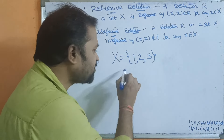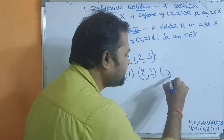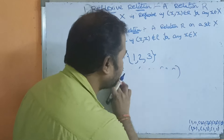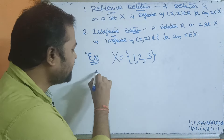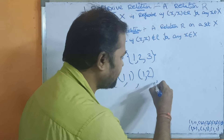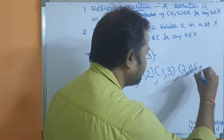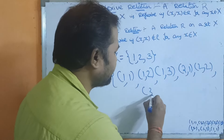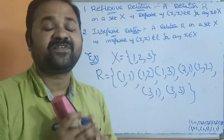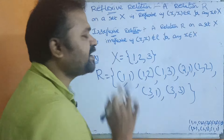We can say it is a reflexive relation if (x, x) belongs to R. Since the members of the set are 1, 2, 3, we need (1,1), (2,2), and (3,3) to belong to R. Let us take an example relation R containing ordered pairs: (1,1), (1,2), (1,3), (2,1), (2,2), (3,1), (3,3).